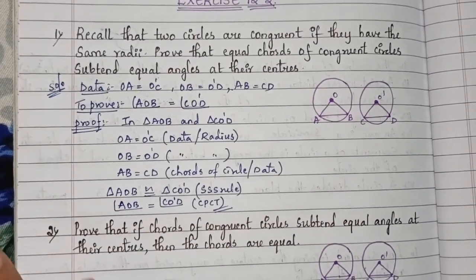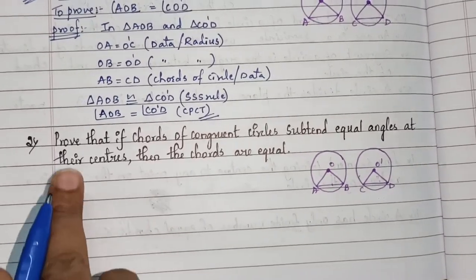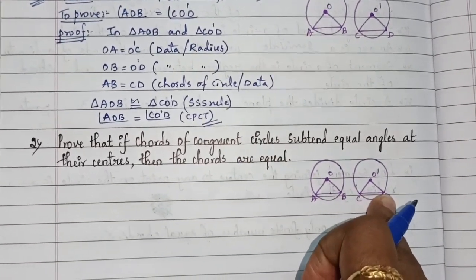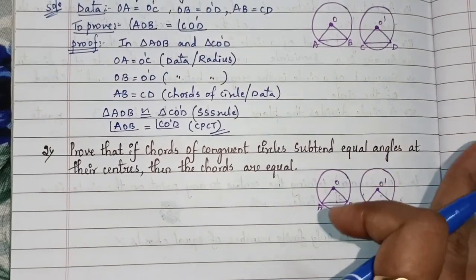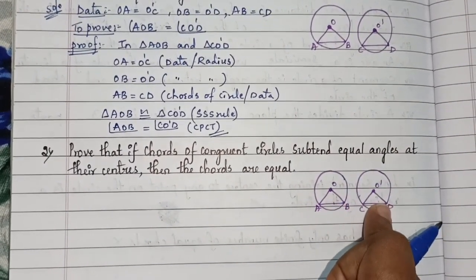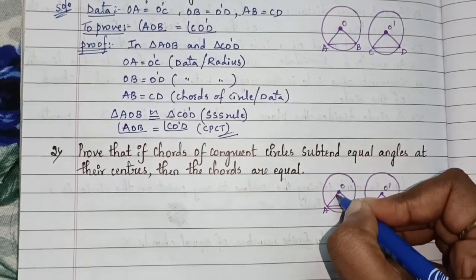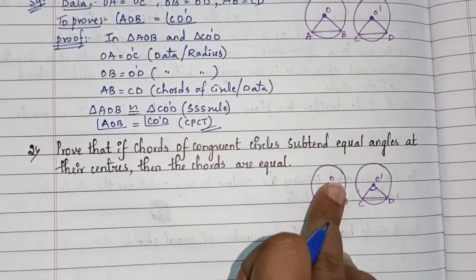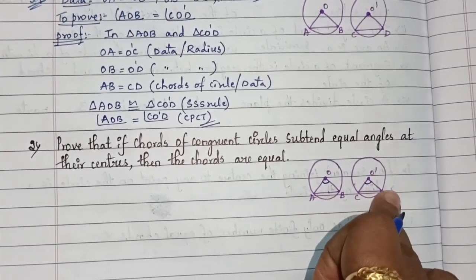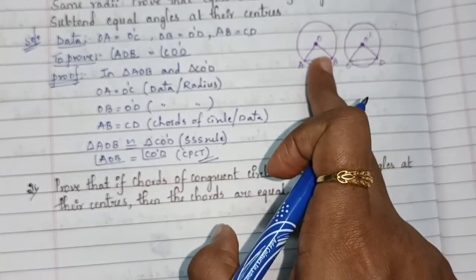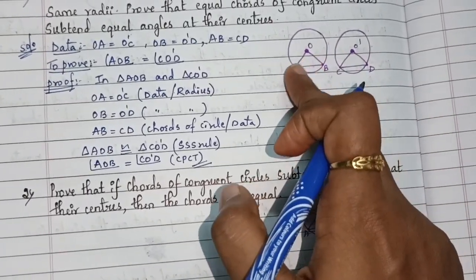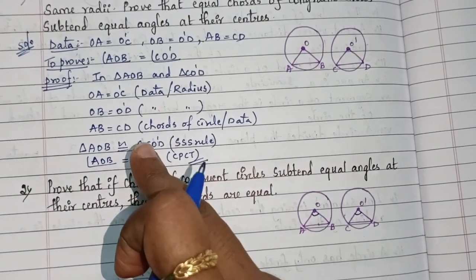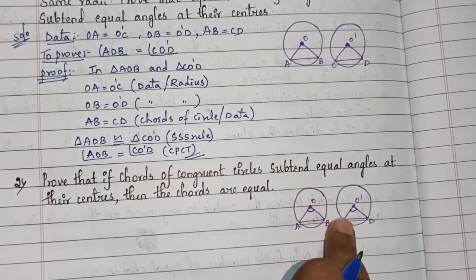Moving to Question 2: prove that if chords of congruent circles subtend equal angles at their centers — that is, angle AOB equals angle CO'D — then we must show that AB equals CD. This is essentially the converse of what we just proved.